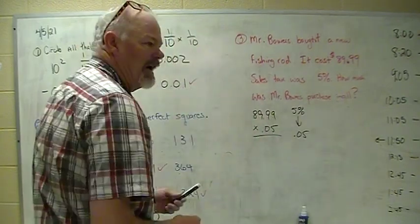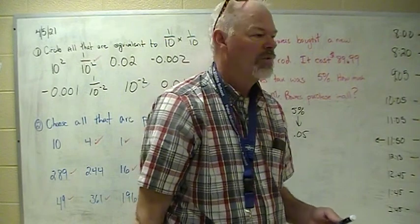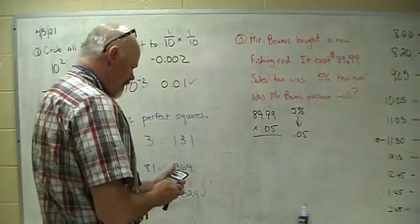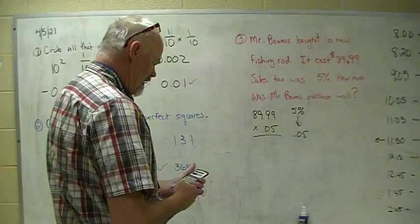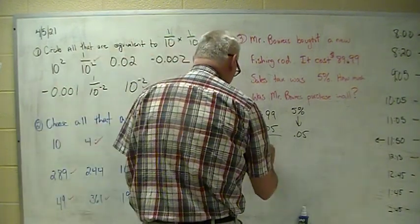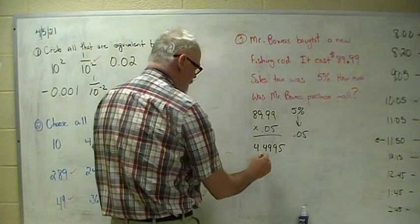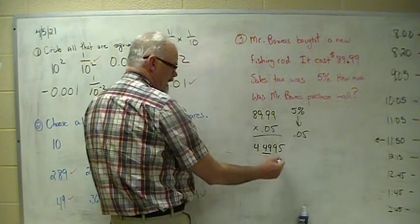This is gonna give us - where's my calculators? I need a calculator. Who took all the calculators? So I do 89.99 times 0.05 and I get this number: 4.4995. Remember, I'm only worried about the first two, but if there's a number there I gotta look at it, and that nine tells me to add a penny. So my tax is $4.50.